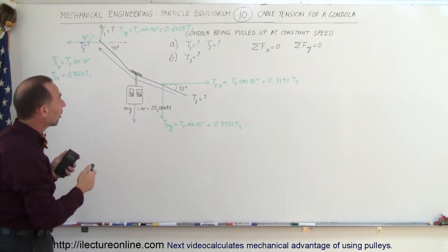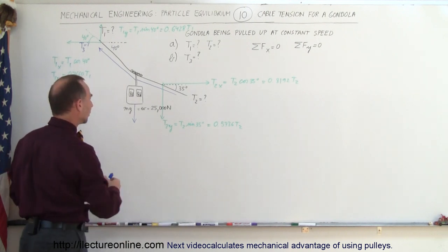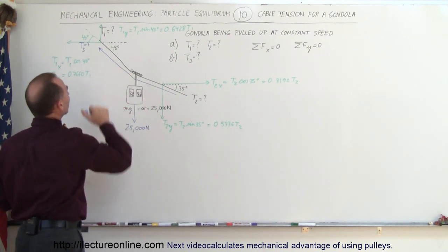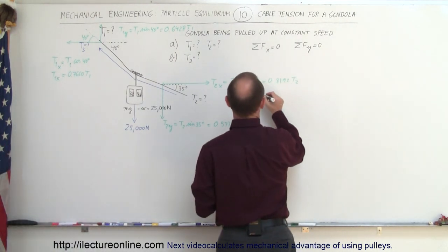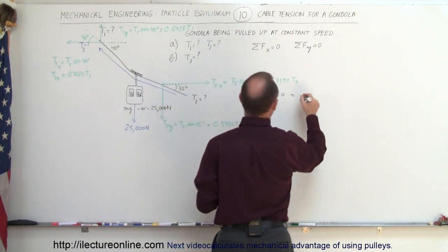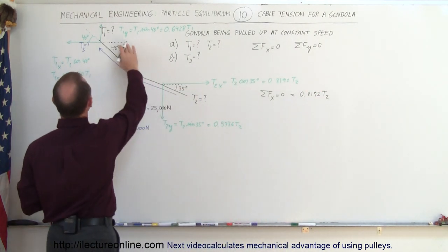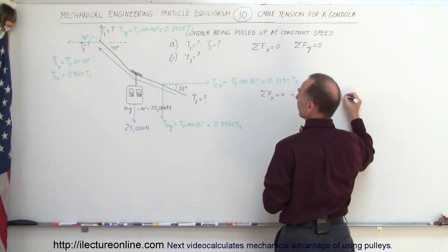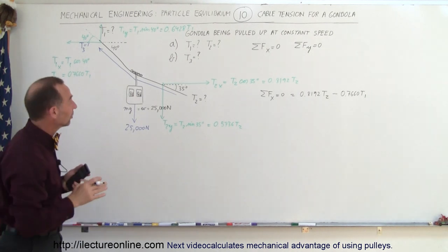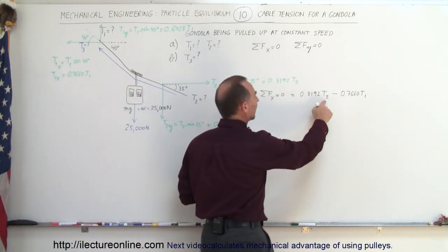Now we have both x and y components of the black cable. We also have the weight of the gondola, 25,000 newtons, as a y component. We're ignoring T3 for now. The sum of forces in the x direction equals zero: 0.8192·T2 minus 0.7660·T1 equals zero. Those are the only two x-component forces on the diagram.